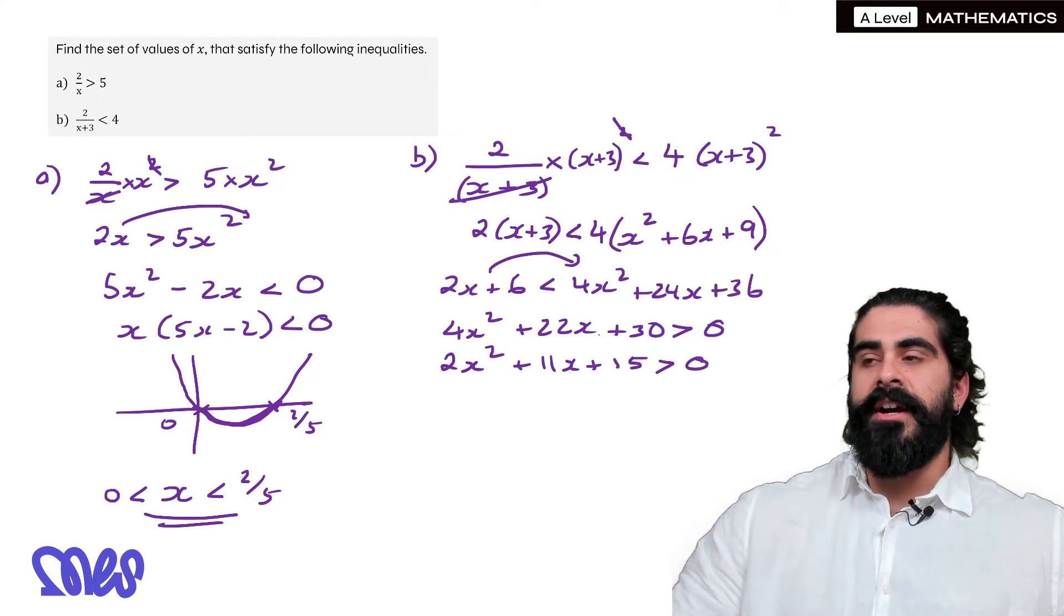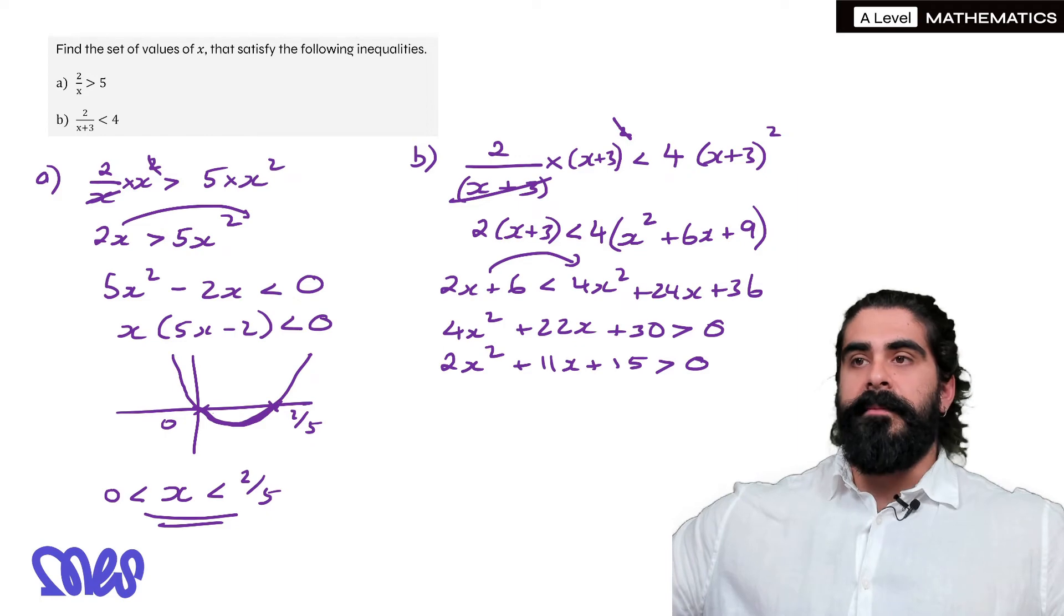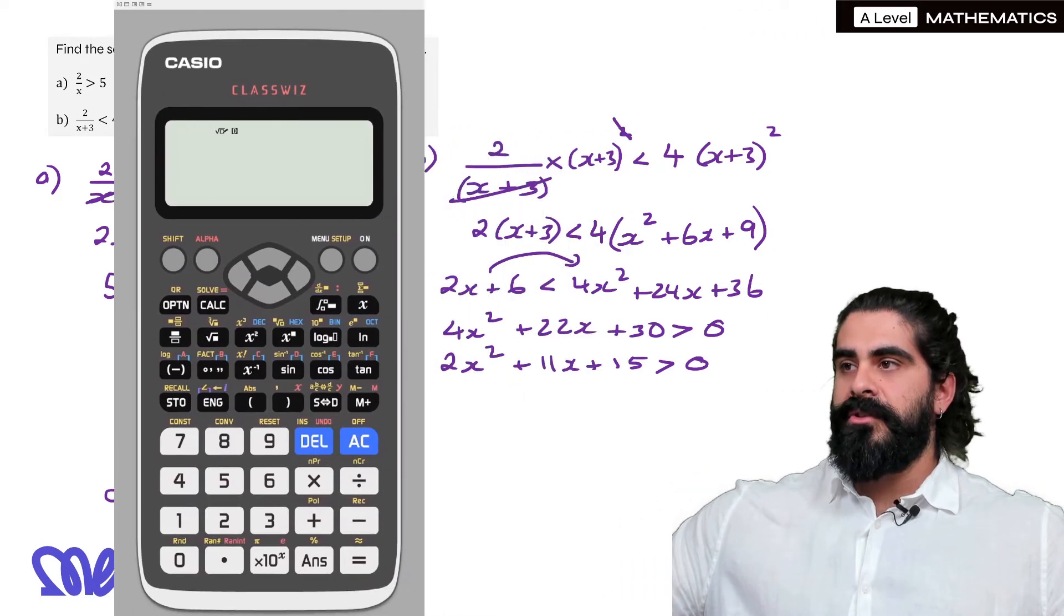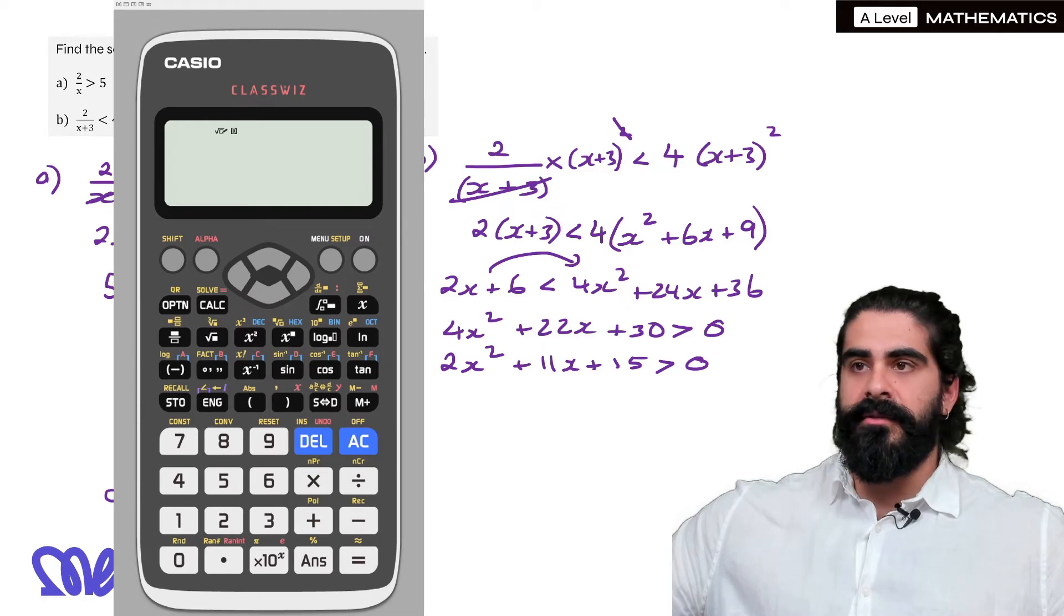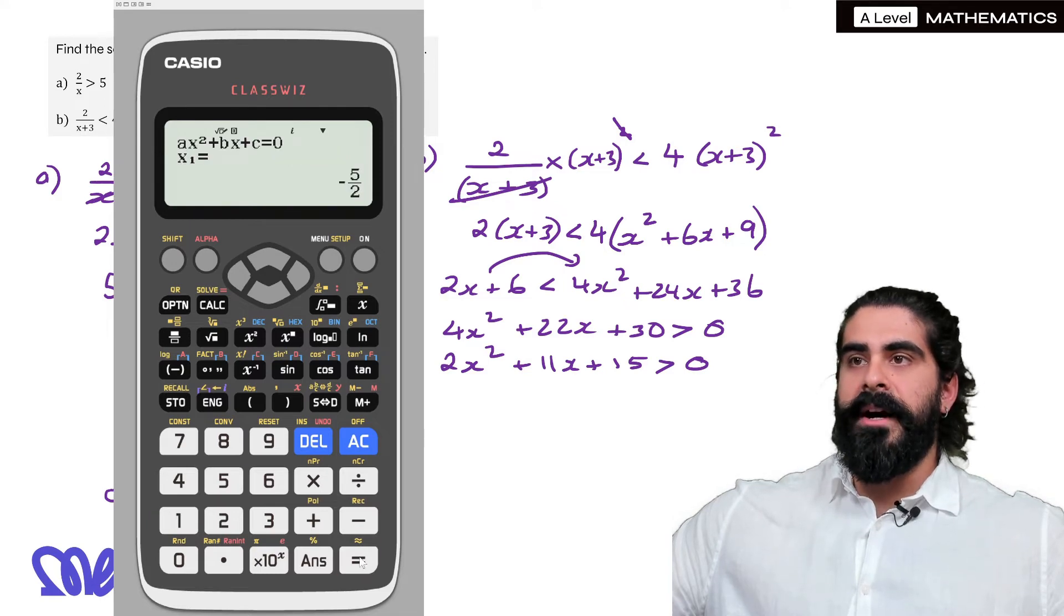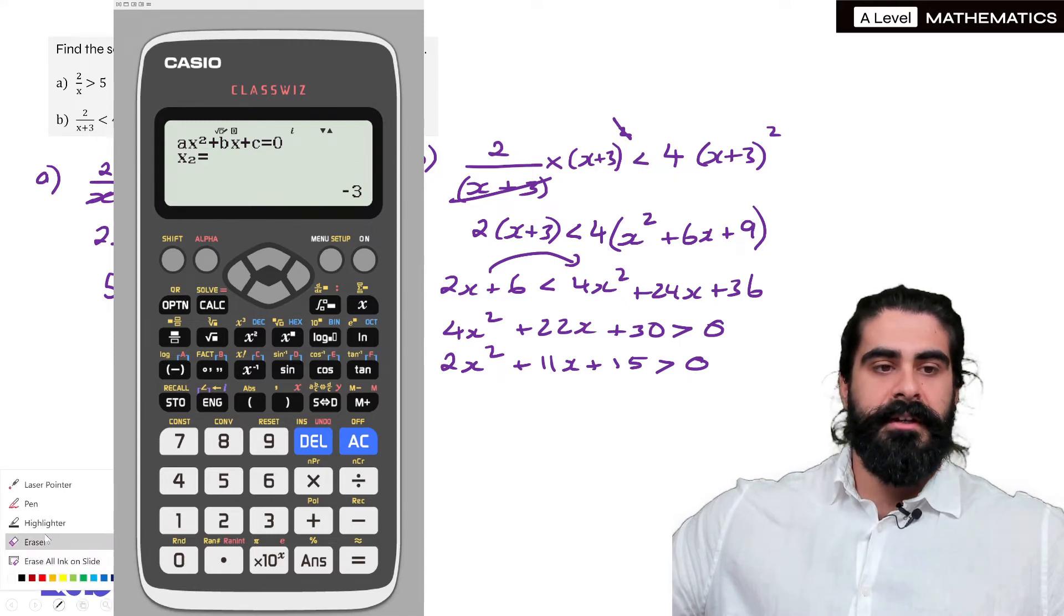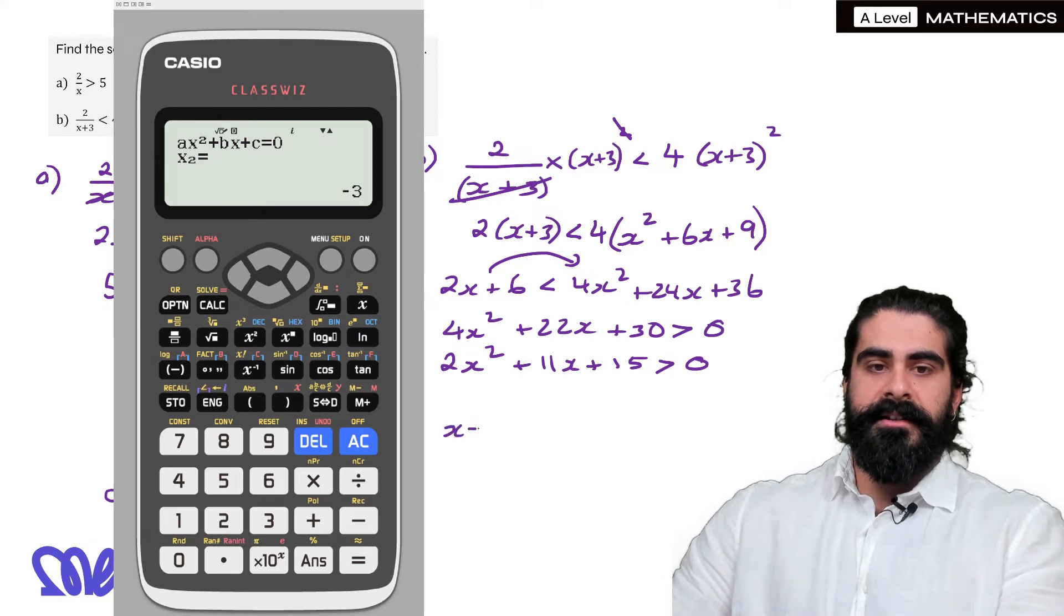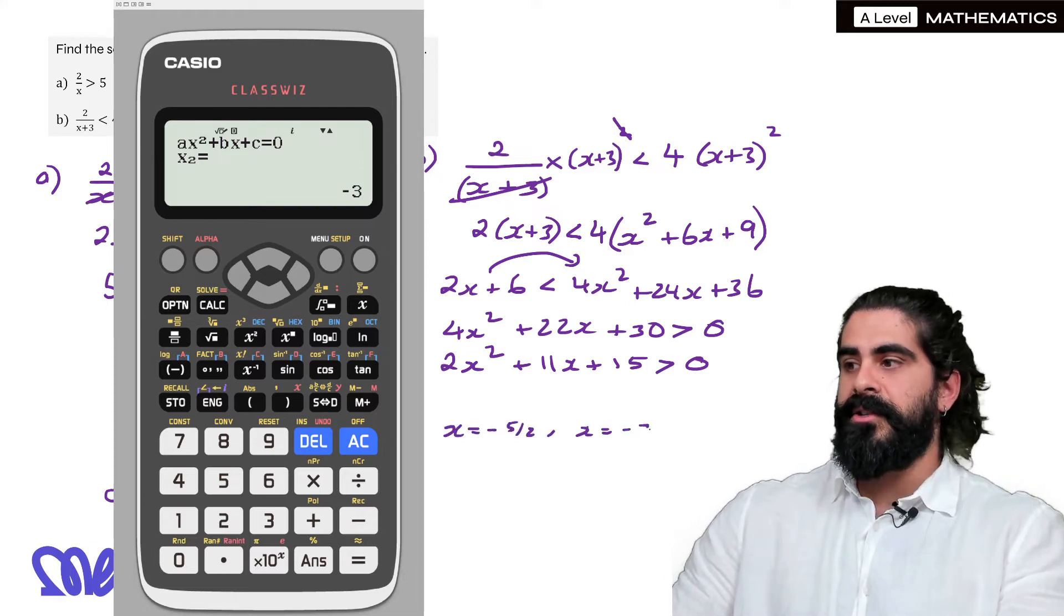Now, if you're not interested in trying to factorize, you can use your calculator. So, getting our calculator out, let's make sure we can see everything. Menu, polynomials, we want 2, 11, and 15. So, you've got minus 5 over 2 and minus 3. So I'm going to write that here, x equals minus 5 over 2, x equals minus 3.